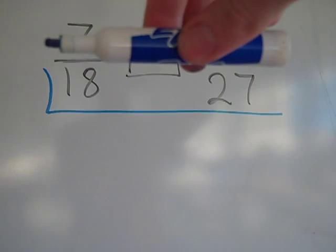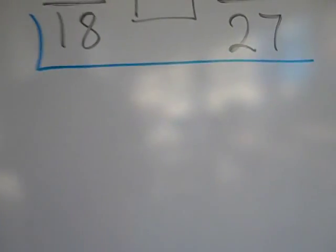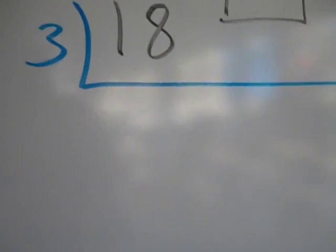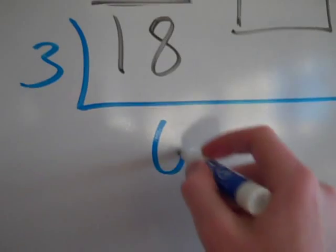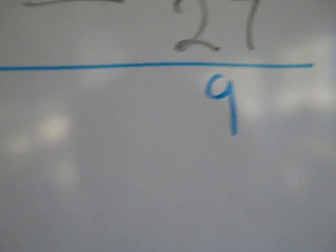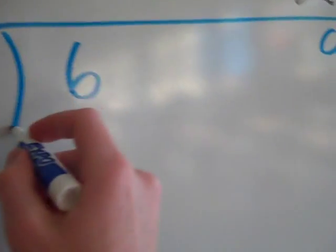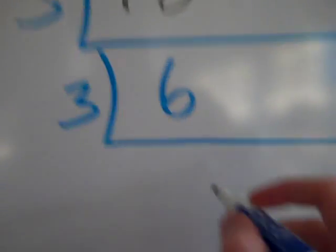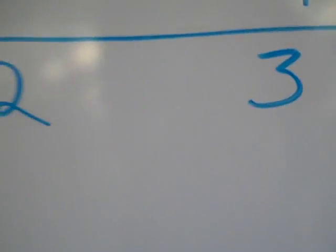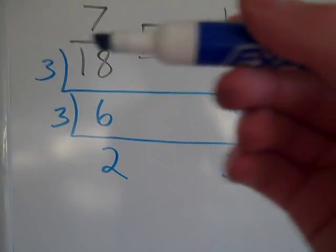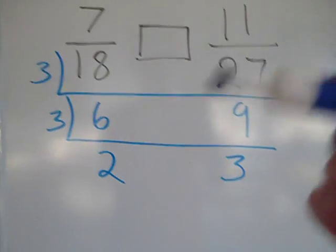I'm thinking: what numbers go into both eighteen and twenty-seven? The first thing I notice is three goes in. Three goes into eighteen six times, and three goes into twenty-seven nine times. Then I notice six and nine can both be divided by three again — that gives two and three. Two and three don't have any common factors other than one, so my ladder is complete. I could have just used nine and gotten two and three right away.